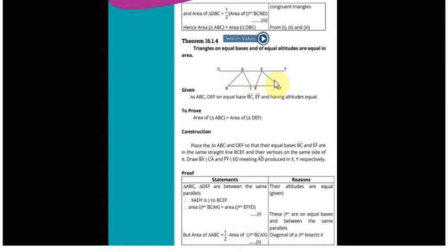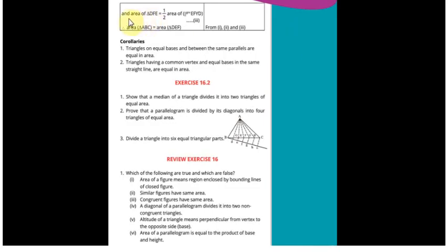Isi tarah se agar yahan pe dekhein to DF is diagonal of DEFY ya EFYD jo parallelogram hai uska diagonal hai DF so it will also divide it into two equal parts. So DEF is half the area of DEFY. Yahan pe hum yeh bhi likh lein ge ke triangle DFE is equal to half area of EFYD.